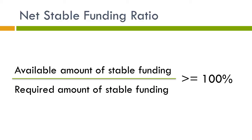The NSFR is defined as the ratio of available amount of stable funding to the amount of required stable funding. This ratio must be greater than 100%. Stable funding is defined as the portion of those types and amounts of equity and liability financing expected to be reliable sources of funds over a one-year time horizon under conditions of extended stress.